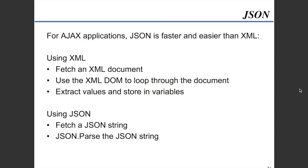A quick note for AJAX applications: JSON is faster and easier than XML. Using XML, you have to fetch an XML document, use the XML DOM to loop through the document, and extract the values and store them in variables. Using JSON with AJAX, you fetch a JSON string and simply JSON.parse that string.